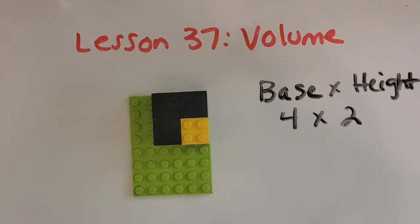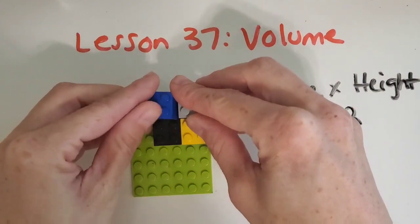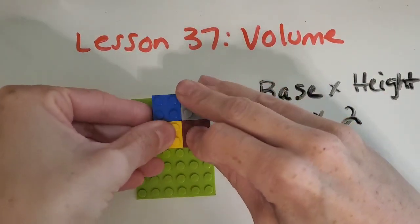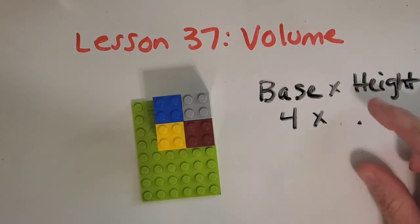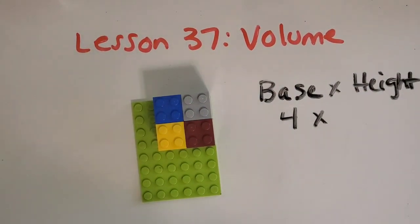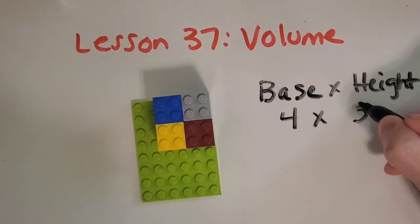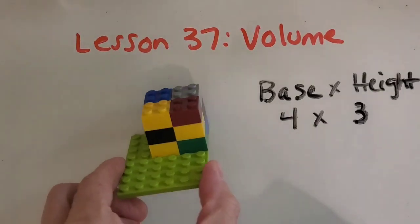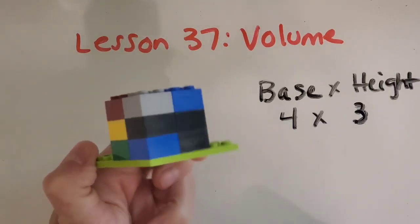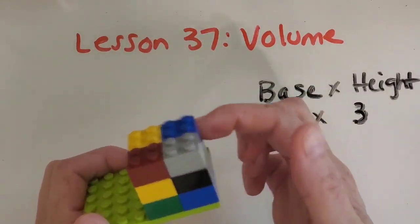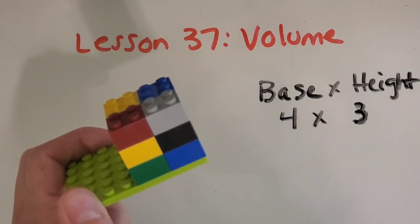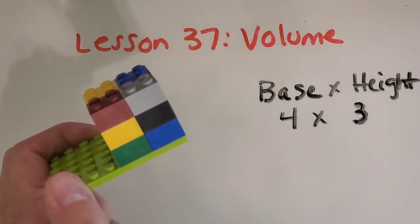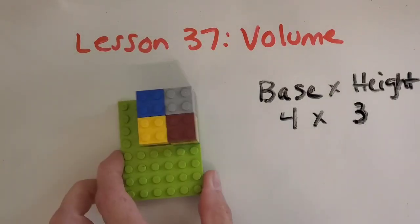Now let's make another layer. This time, how many layers are there? The height is three, or the layers are three. So now, how many blocks have you used? You could definitely do the four on the bottom, plus the four in the middle, plus the four on the top, or you could just simply do base times height — four times three. What do you get? Twelve.